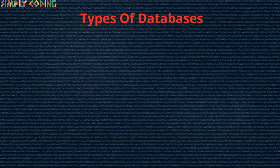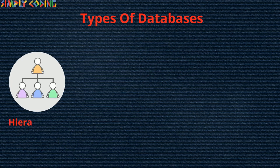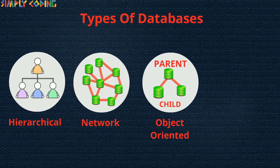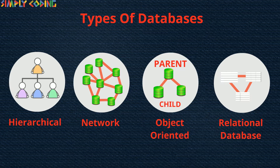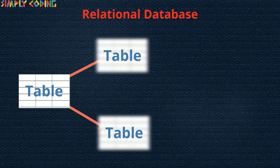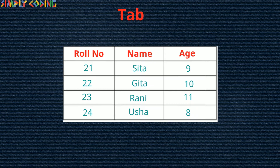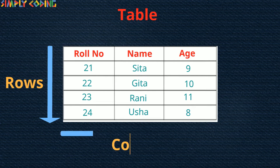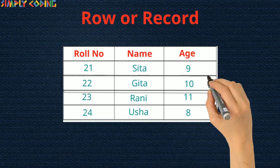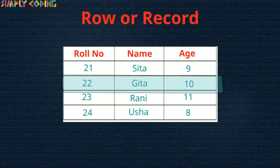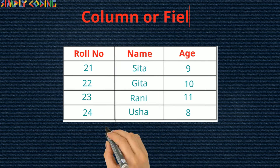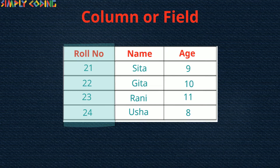There are different types of databases. They include hierarchical, network, object-oriented, and relational database. We will cover relational database here. When the data is stored in multiple tables that are linked via a common field, then such a database is called a relational database. A table is a data set that is organized into rows and columns. A row is also called a record, which represents one complete unit of information. A column is also called a field, which contains one type of information.